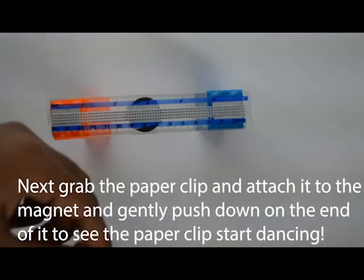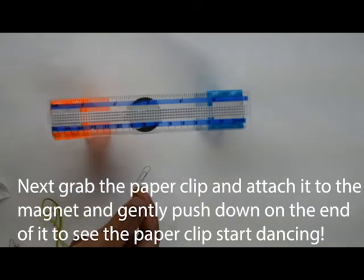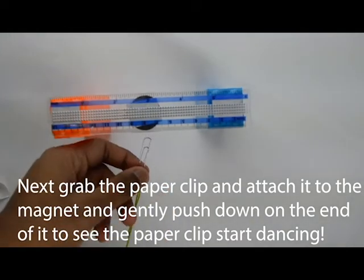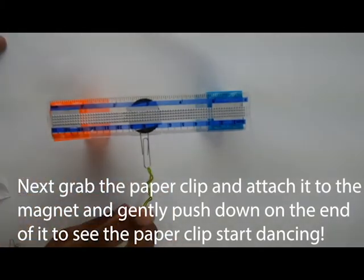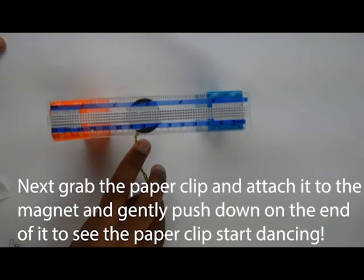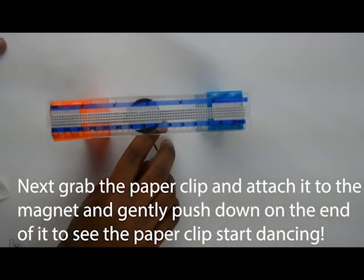Next, grab the paper clip with the string attached to it and connect it to the magnet. Then, by holding the very end of the string, lightly push down with your finger and you will slowly see that the paper clip will start to dance.